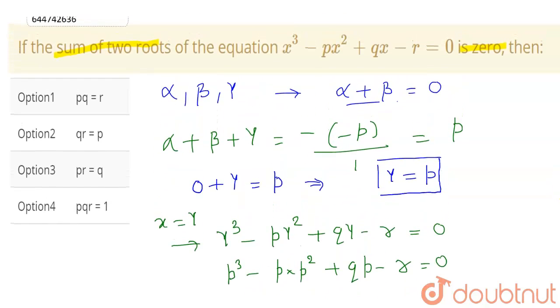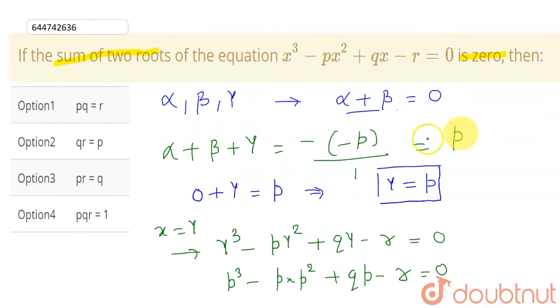So let me check my options. qp is coming to be r. So option one will be correct. Hope you understand the solution. Thank you.